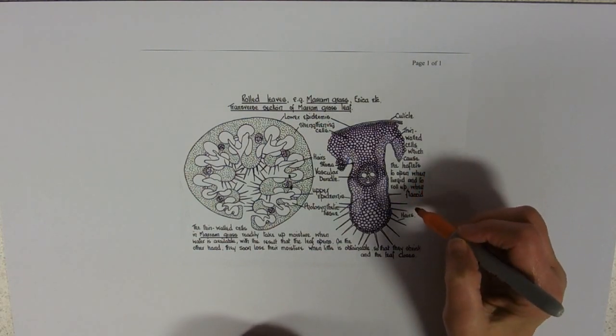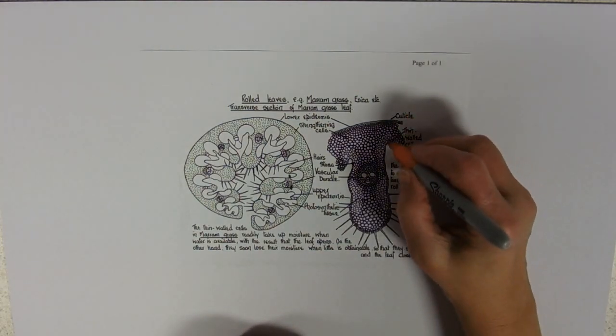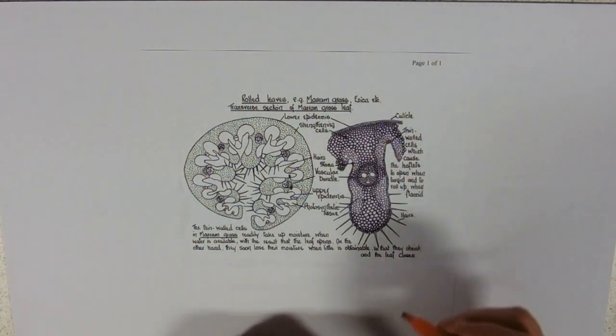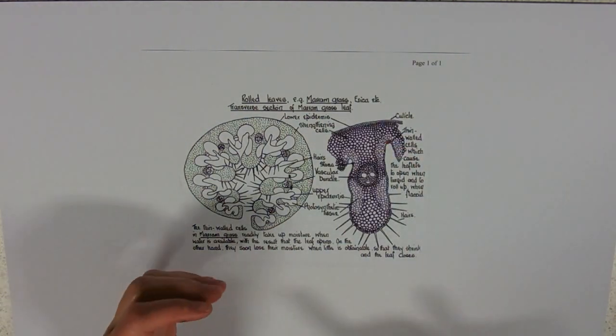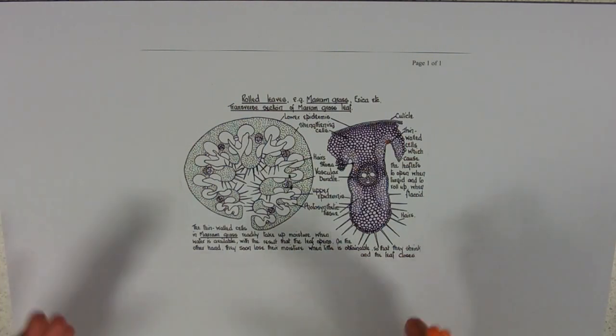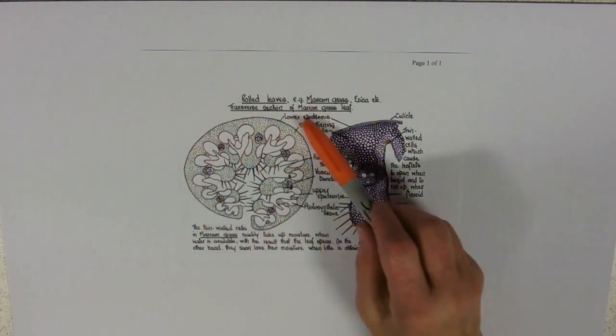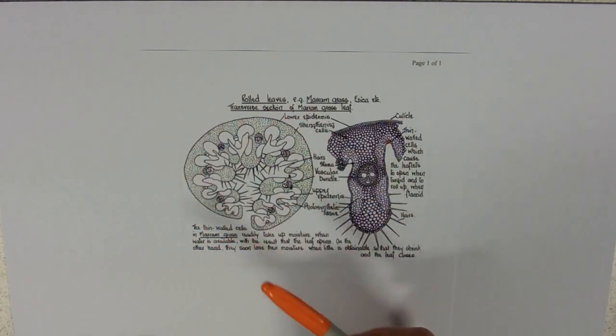They also have a feature—so she's marked them as thin-walled cells which cause the leaflets to open when turgid and roll up when flaccid. These little cells here are the hinge cells, so that when they go flaccid and collapse, they're actually going to curl that leaf round. So marram grass is absolutely ideally adapted. It's got just about everything: stomata in the grooves, it's got hairs, it's got rolled leaves, and of course it's got less surface exposed to the outside, to the wind and the sun, if there is any in Britain ever.